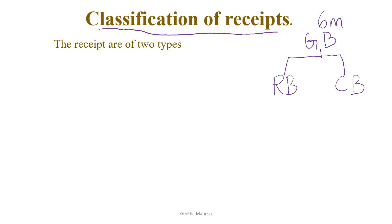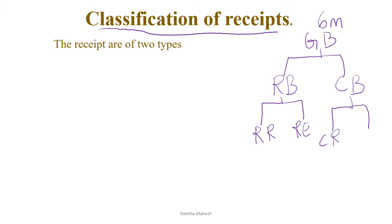Revenue budget has two components. One is revenue receipts, and this is revenue expenditure. Capital budget is also two parts: one is capital receipts and this is capital expenditure.